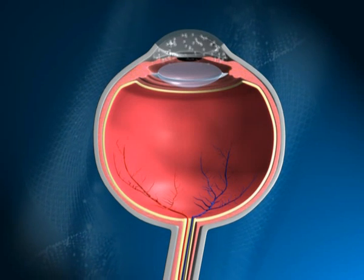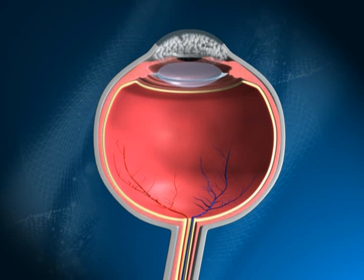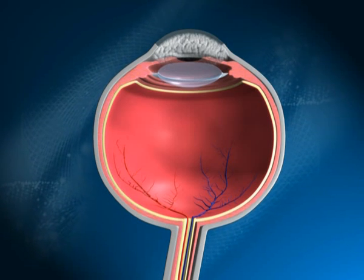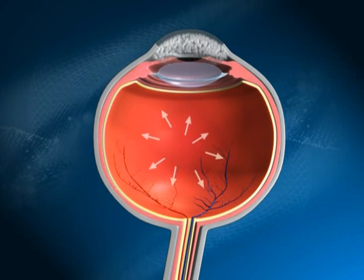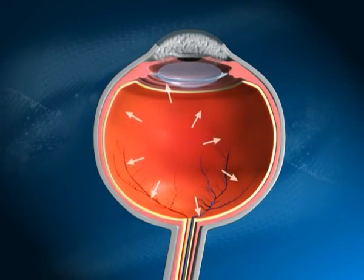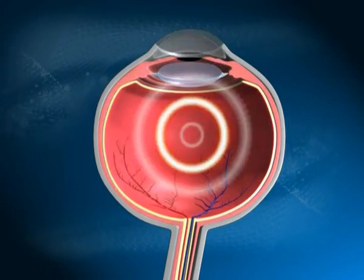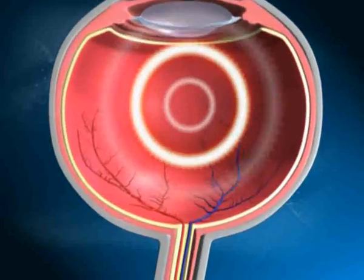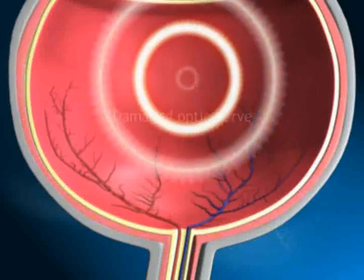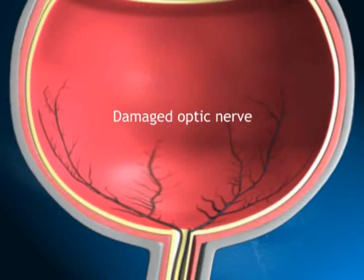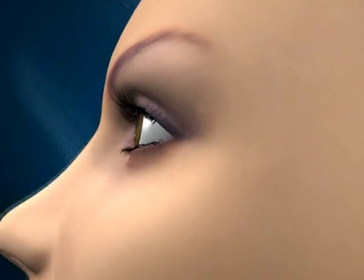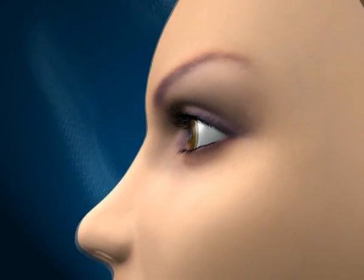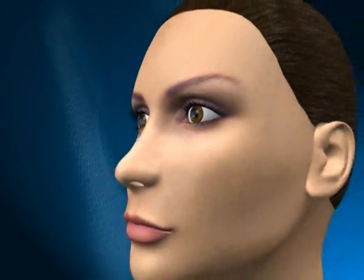If the fluid does not get drained on a regular basis, it builds up in the anterior chamber. When the fluid builds up, pressure and tension inside the eye increase. This increase in pressure causes damage to the eye and the optic nerve, resulting in the condition called glaucoma, which if left untreated can lead to blindness.